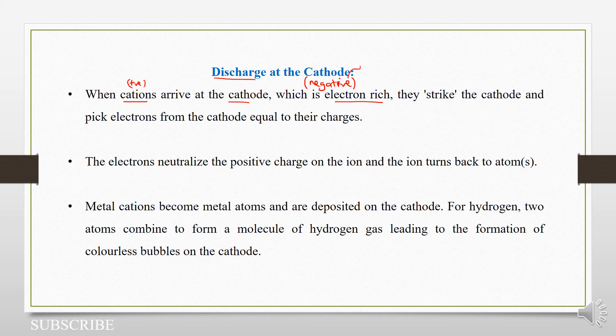Or the other way around, it's negatively charged because it's electron-rich. So when the cations strike the cathode, they pick electrons from the cathode equal to their charges.